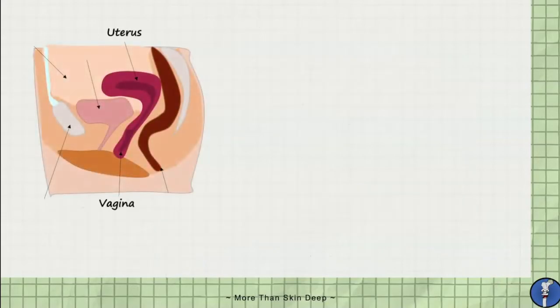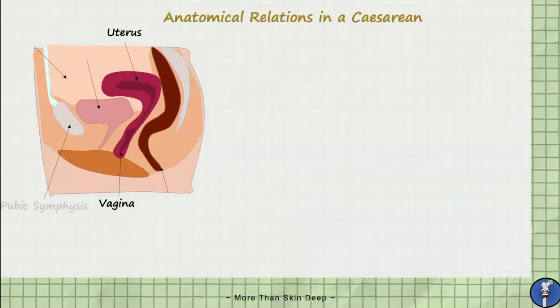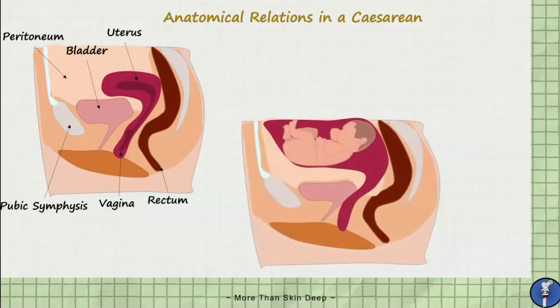After you slice through all of these layers, you still have to remember the anatomical relations of the uterus. Particularly, there is the pubic symphysis, peritoneum, bladder, and rectum. The bladder is often drained with a catheter and retracted inferiorly to reveal the gravid uterus. The bladder is anterior to the uterus while the rectum is posterior.